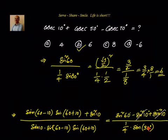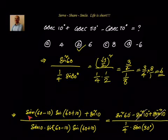Substituting the values, we have (√3/2)² divided by (1/4 · 1/2). Simplification gives us 6. Two formulas were used here: sine(a minus b) · sine(a plus b) = sine squared a minus sine squared b; and sine a · sine(60 minus a) · sine(60 plus a) = 1/4 · sine 3a.